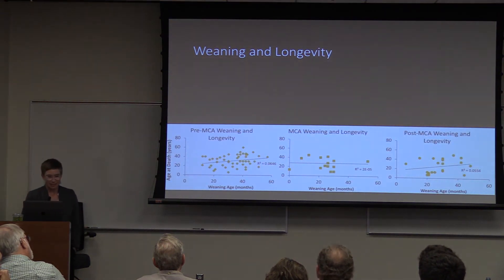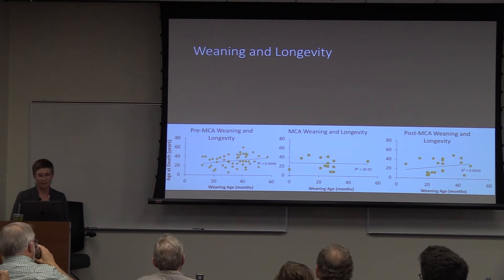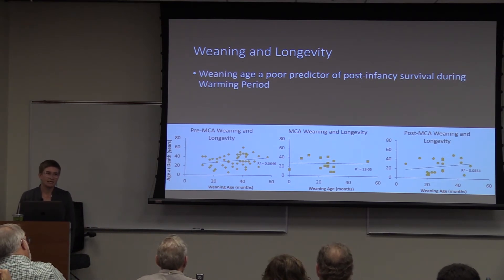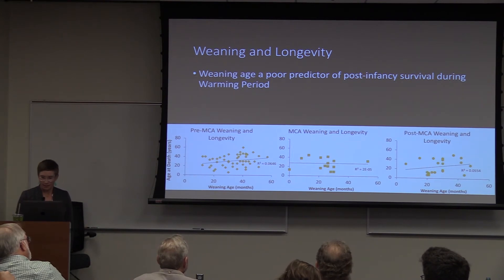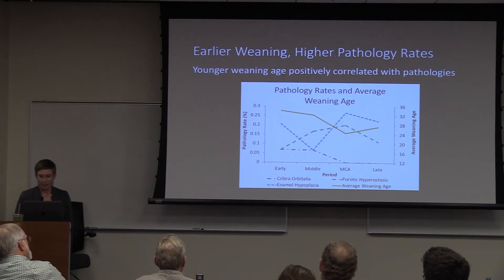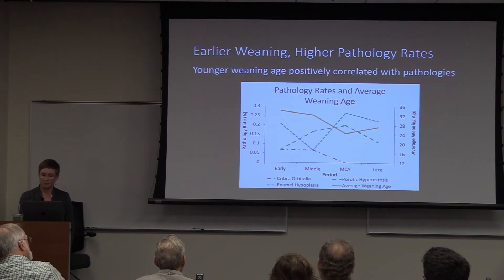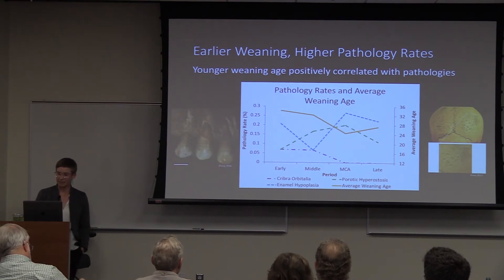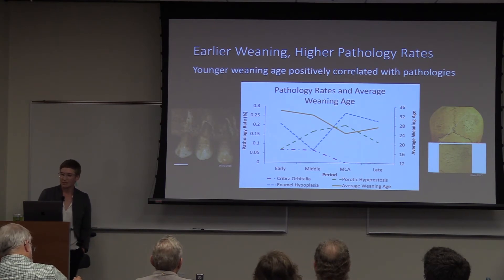When we compare age at death to weaning age as a broad-scale proxy for how duration of breastfeeding might impact longevity, we can see that weaning age is a poor predictor of post-infancy survival during the warming period — consistent with the idea that in a time period with high extrinsic mortality, parental investment is a poor predictor of offspring survival. There's also generally reduced life expectancy during and after the warming period. When weaning age is compared to rates of skeletal pathologies indicative of dietary stress, there's a correlation between reduced weaning age, increased rates of porotic hyperostosis, and enamel hypoplasia.